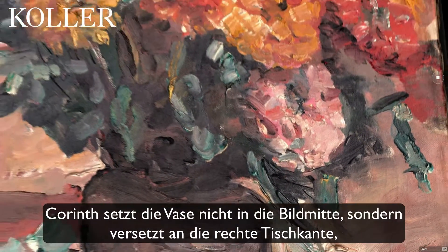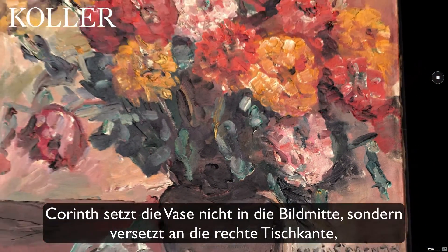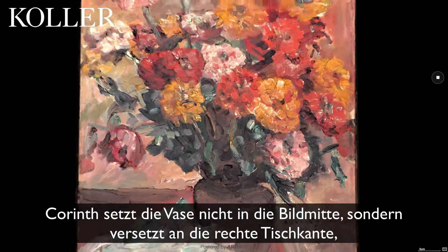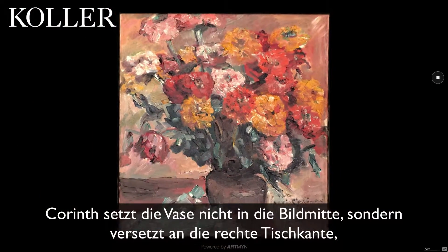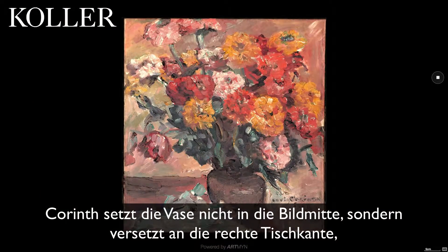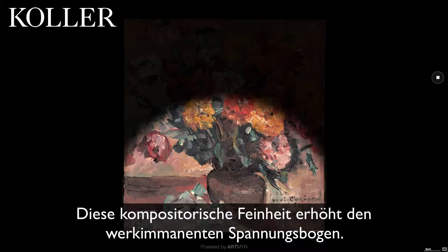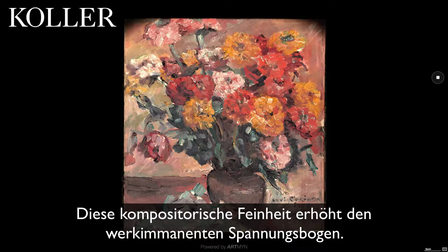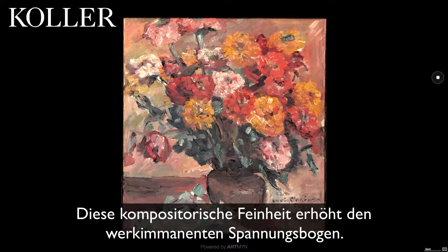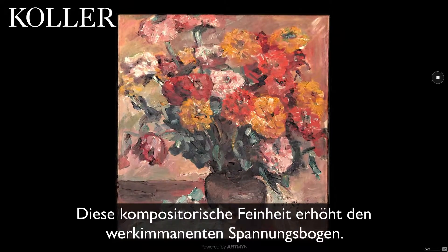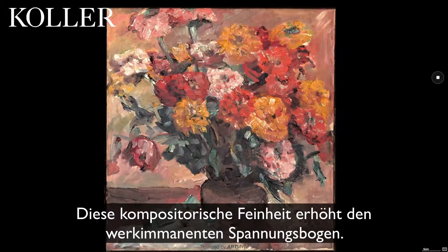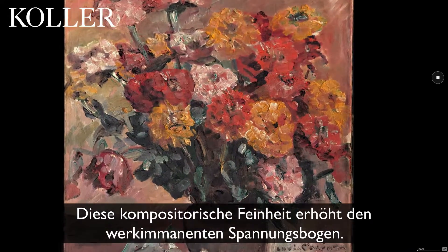Corinth places the vase not in the centre of the painting but on the right-hand edge of the table, in the so-called golden section. The finesse of this compositional feature serves to further increase the work's intrinsic tension.